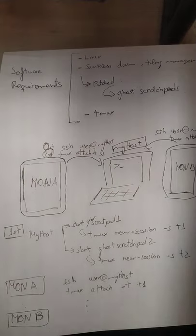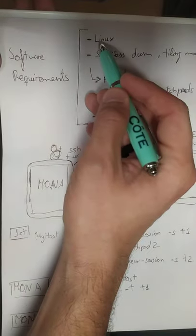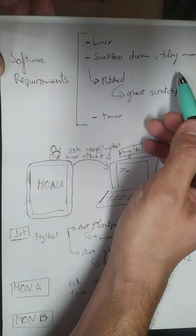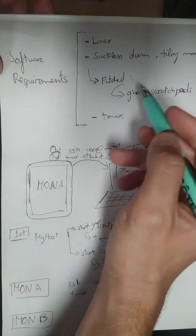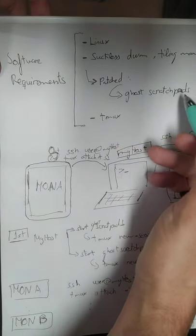I'm gonna show you a little bit because it might be a little bit confusing. I'm gonna show you how everything is configured. The requirements to do this are, obviously, Linux and then Suckless DWM as the tiling window manager. You'll need to have it patched with this new patch called Ghost Scratch Patch.